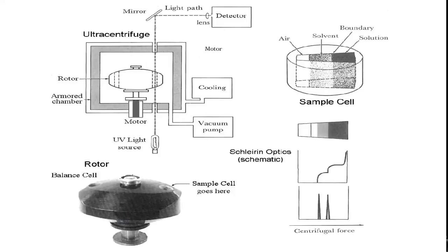This is the labeled diagram of the analytical ultracentrifuge. It shows the rotor in which you place your tubes, and the motor that controls it. There is also a light source and a vacuum pump.